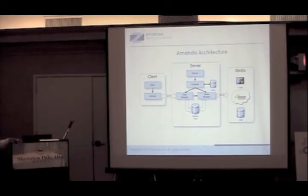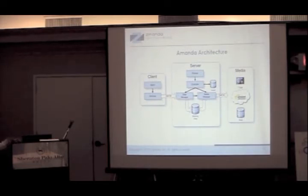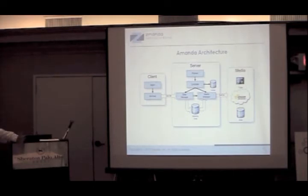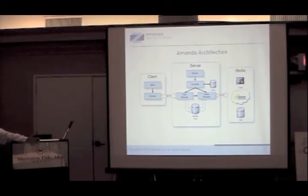The controller stores the index on a file-based database on the server, and the catalog format is pretty much open — many in the community have written additional tools to parse it for reporting and other purposes. The index is of files, not contents. It contains information about what files are in each media volume, what backups exist for a particular folder or application, and what was contained in each. Some amount of state is also stored on the client depending on the application.